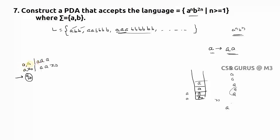The correct rule when top of stack is a: you must push three a's. So the transition is a, a / aaa. For the second input a, you remove the top a and push three a's — giving you four a's total. For the third a (self-loop), same rule: remove one a, push three a's — resulting in six a's. So for three input a's you get six a's in the stack, which is correct.